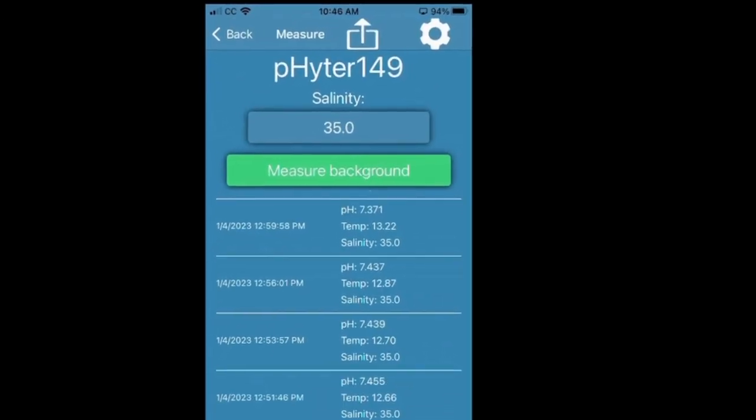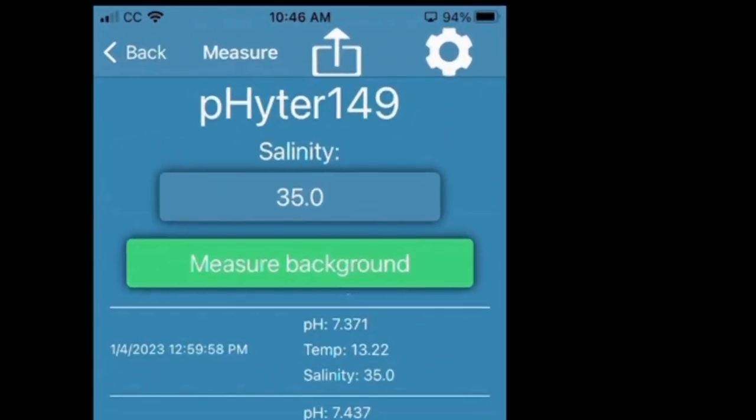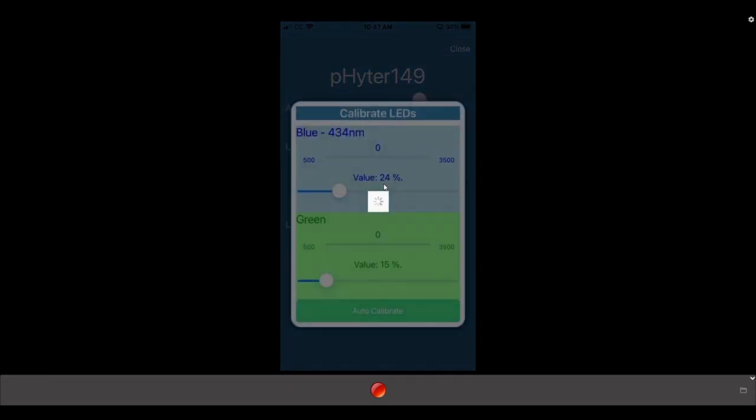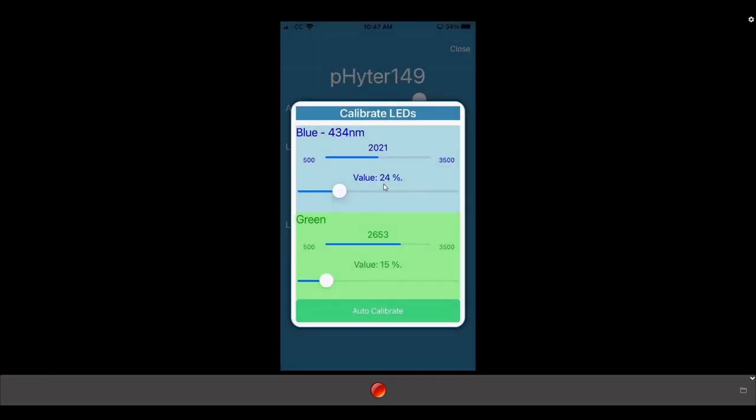When you first use your Phyta, you will need to calibrate by pressing the settings button and then calibrate, and you need to adjust these sliders to give a value somewhere between 1000 and 3500. With water in the sample, both of these are in the 2000s, so that's an ideal range.